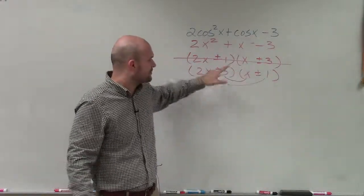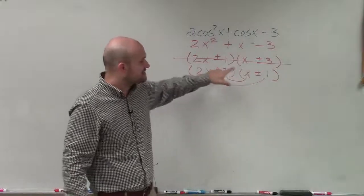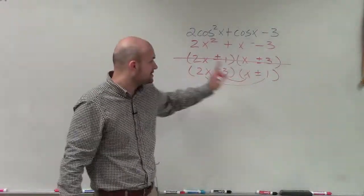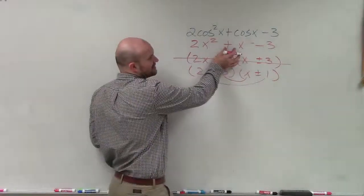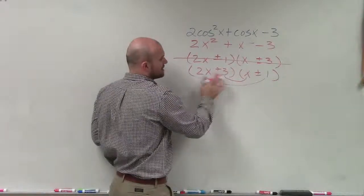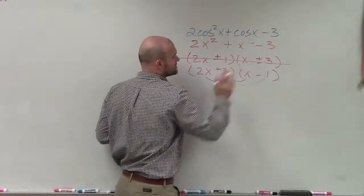so 2x times 1 and 3 times x, 3 times x is going to be larger than 2x times 1. So that's going to carry the sign for the x. So I'm going to want to make the 3 positive and this 1 negative.